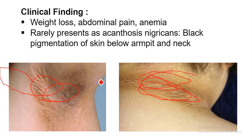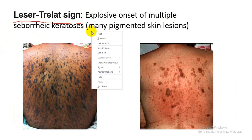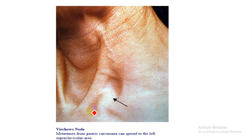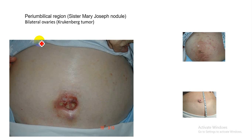Acanthosis nigricans is due to the production of fibroblast growth factor, which causes blackening of the skin below the armpit and neck. Another sign is the Leser-Trélat sign, which is the explosive onset of multiple seborrheic keratoses — many pigmented skin lesions present on the back and ventral side of the body. Virchow's node is due to metastasis of gastric carcinoma into the left supraclavicular lymph node.